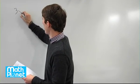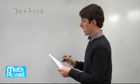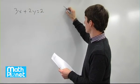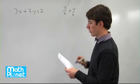We have the equation 3x plus 2y equals 2, and we want to write this expression, x over 2 plus y over 6, in terms of only y.